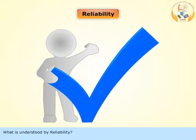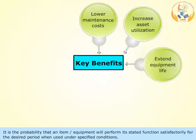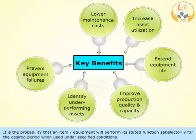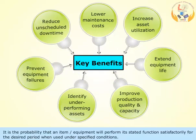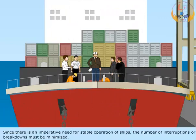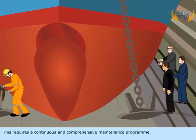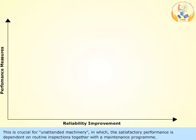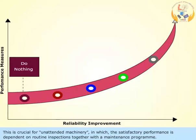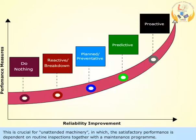What is understood by Reliability? It is the probability that an item or equipment will perform its stated function satisfactorily for the desired period when used under specified conditions. Since there is an imperative need for stable operation of ships, the number of interruptions or breakdowns must be minimized. This requires a continuous and comprehensive maintenance program, which is crucial for unattended machinery in which satisfactory performance is dependent on routine inspections together with a maintenance program.